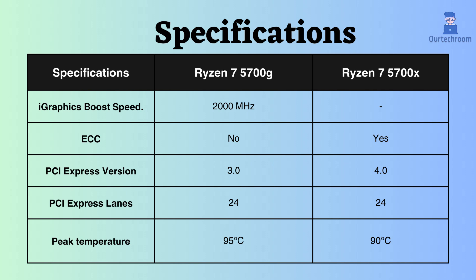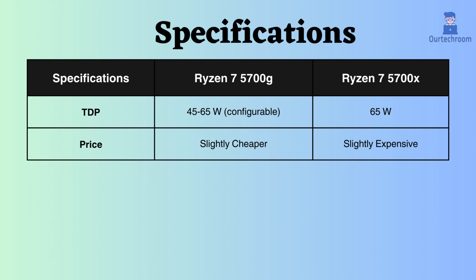The Ryzen 7 5700X can operate at temperatures up to 90 degrees Celsius, while the Ryzen 7 5700G can reach temperatures of up to 95 degrees Celsius. The TDP of the Ryzen 7 5700G is configurable and ranges from 45 to 65 watts, whereas the Ryzen 7 5700X has a fixed TDP of 65 watts. The 65W TDP of the Ryzen 7 5700X applies solely to the CPU, without any throttling due to integrated graphics, ensuring more consistent performance under heavy CPU loads compared to the 5700G.